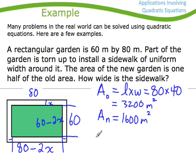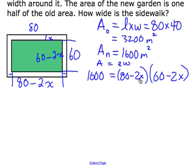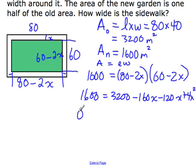Let's see if we can figure out what x is equal to. I know the area of my new garden is 1,600 meters, so 1,600 equals, I'm using the area formula again, area equals length times width. So my length is 80 minus 2x, and my width is 60 minus 2x. Now I've got an equation that is in x, and so I can solve this.